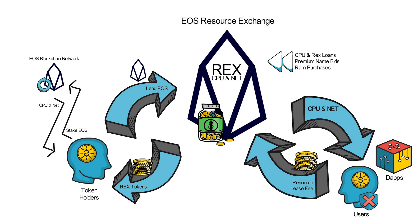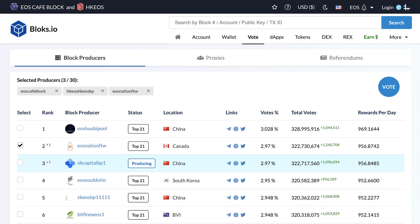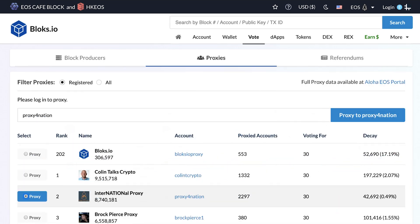Token holders are able to lend EOS to REX by purchasing REX tokens. In order to successfully lend EOS to REX, you must also stake and vote for at least 21 block producers. You can do this by going to the Vote tab and either voting for 21 individual block producers, or proxying your vote to a proxy that is actively voting for at least 21 BPs, such as EOS Nation's Proxy for Nation.